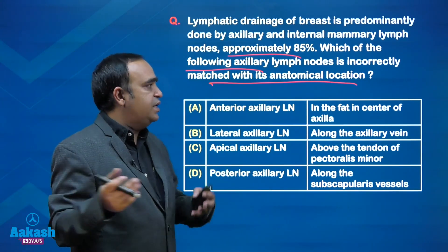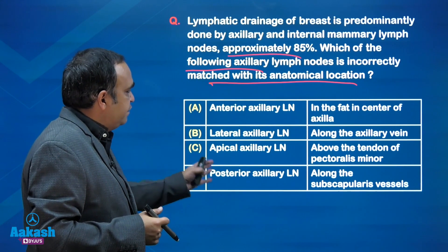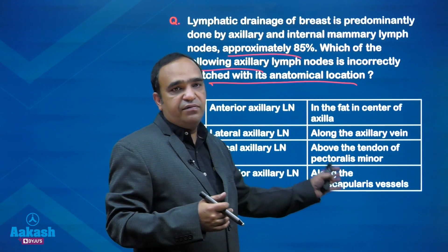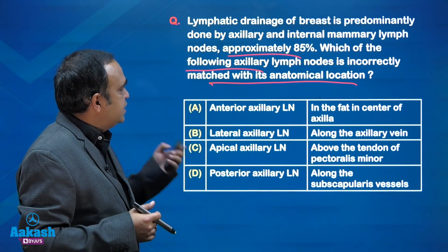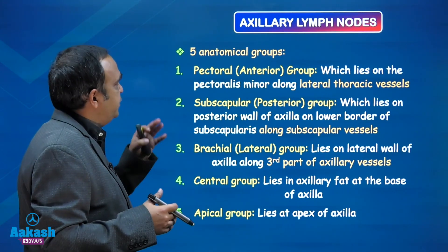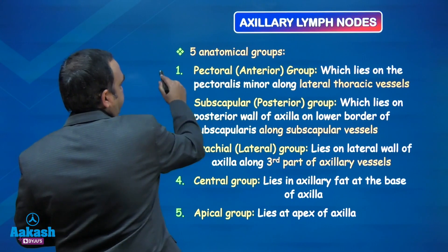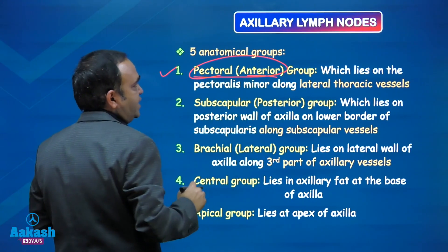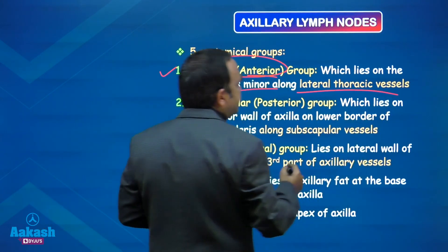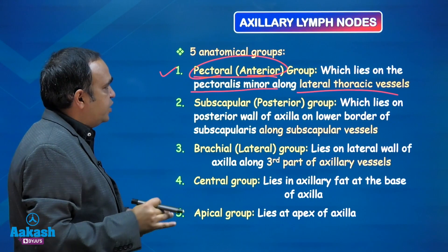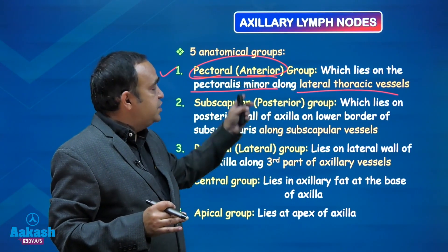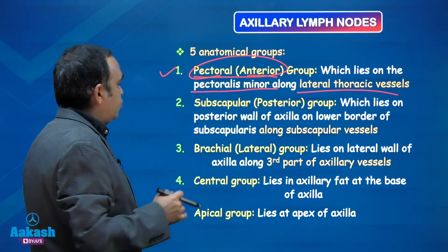On the left side we have the groups of axillary lymph nodes, on the right side we have their anatomical location, and we have to match them. Before that, let us discuss the different anatomical groups of axillary lymph nodes. We have five of them: pectoral, that is the anterior group, which runs along the pectoralis minor. It is situated along the lateral thoracic vessels.